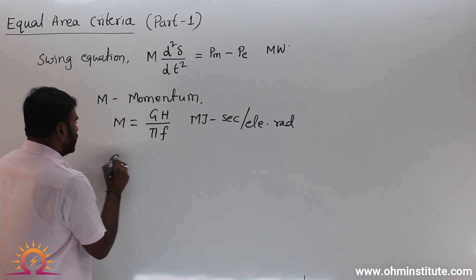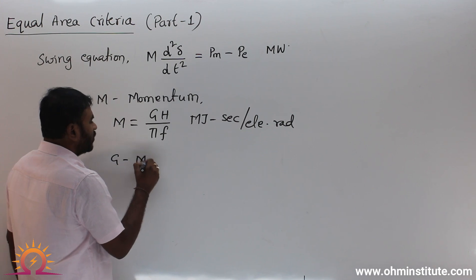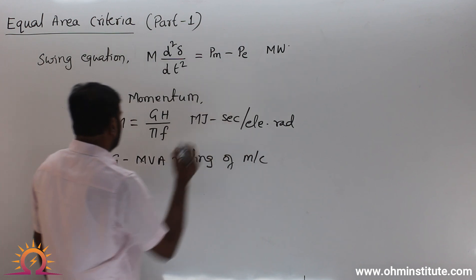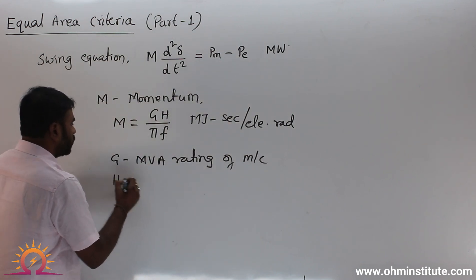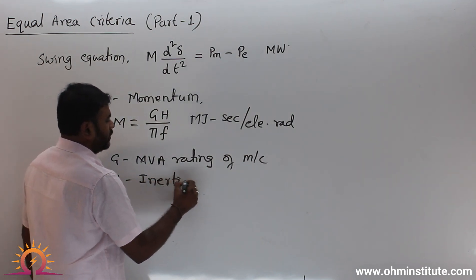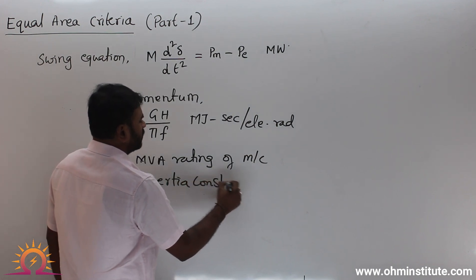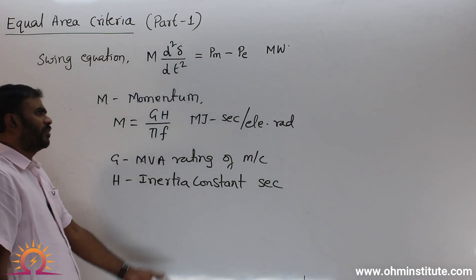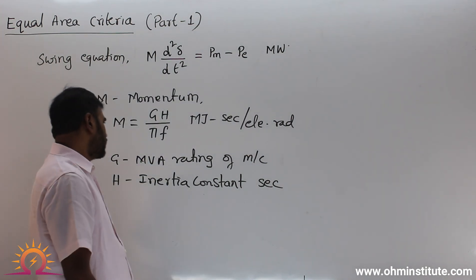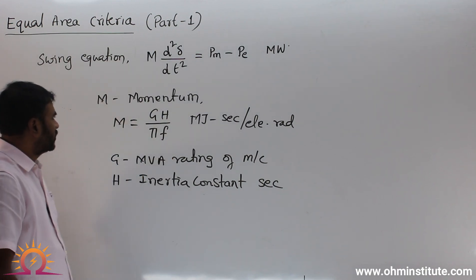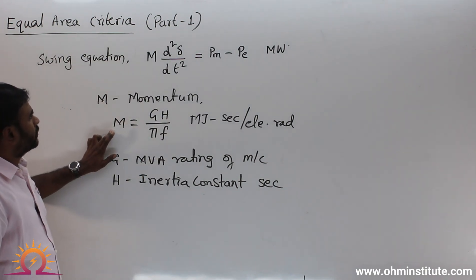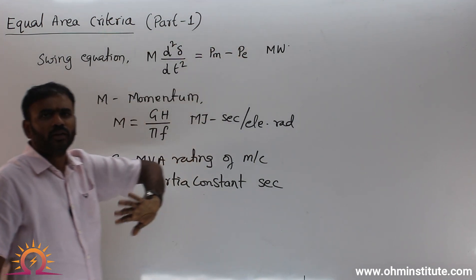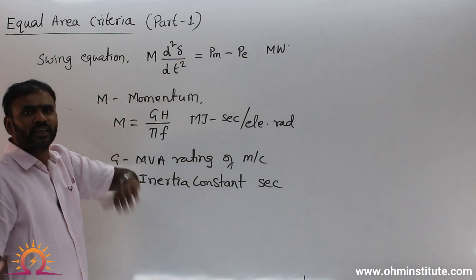That is the momentum. G is the MVA rating of the machine, H is the inertia constant — with simplified units in seconds, or megajoules per MVA — and f is the frequency. So this is the momentum when the formula is written in terms of megawatts.